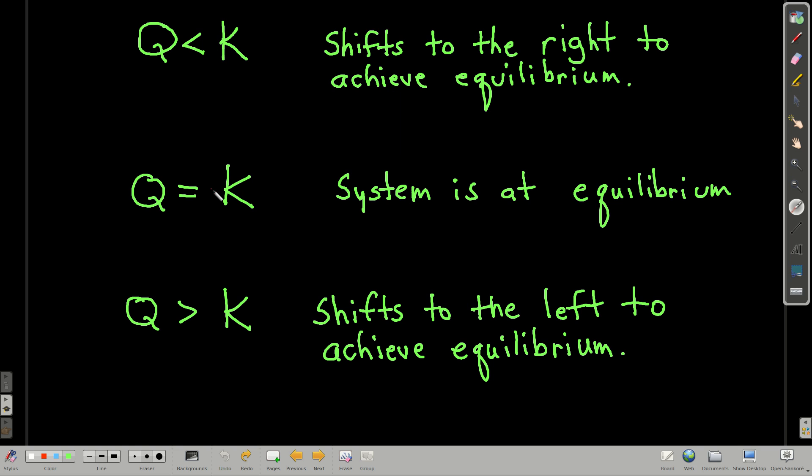On the other hand, if Q is equal to K, well, that's just equilibrium. The system is at equilibrium, it's not going to shift either way. But if Q is bigger than K, then just the opposite. The system will shift to the left in order to achieve equilibrium, because if Q is bigger than K, then the denominator is too big, so there's too many products, and it's going to shift back to the left to make more reactants, fewer products.